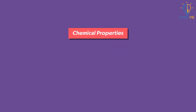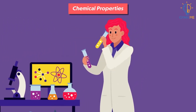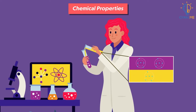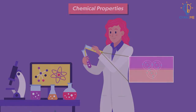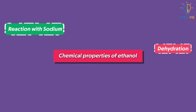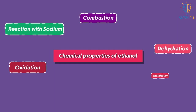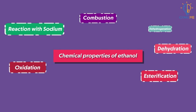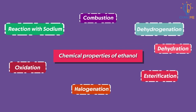Today we will learn how ethanol takes part in various chemical reactions and the products so formed. The different types of chemical reactions of ethanol are dehydration, reaction with sodium metal, oxidation, combustion, esterification, dehydrogenation, and halogenation reactions.